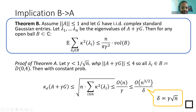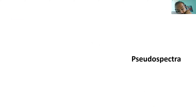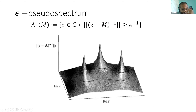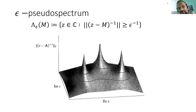The real content is in the proof of Theorem B, which has four short steps. The first step passes from eigenvalue condition numbers to the area of the pseudo-spectrum. The epsilon pseudo-spectrum of a matrix is a set in the complex plane parameterized by epsilon — it is the level set of the norm of the resolvent, specifically the set of points z where the resolvent (z - M)^{-1} has norm at least 1/epsilon.